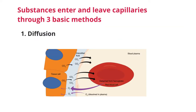Diffusion is the most important method used when substances are entering and leaving the capillaries. In diffusion, substances move down their concentration gradient — from higher concentration to lower concentration. This is a passive process and is the easiest way for substances to move.